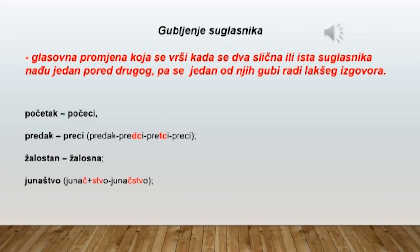Danas dakle govorimo o glasovnoj promjeni koja se naziva gubljenje suglasnika. To je glasovna promjena koja se vrši kada se dva slična ili ista suglasnika nađu jedan do drugog pa se jedan od njih gubi radi lakšeg izgovora. Na primjer imamo imenicu početak koja ima taj oblik u nominativu jednine.